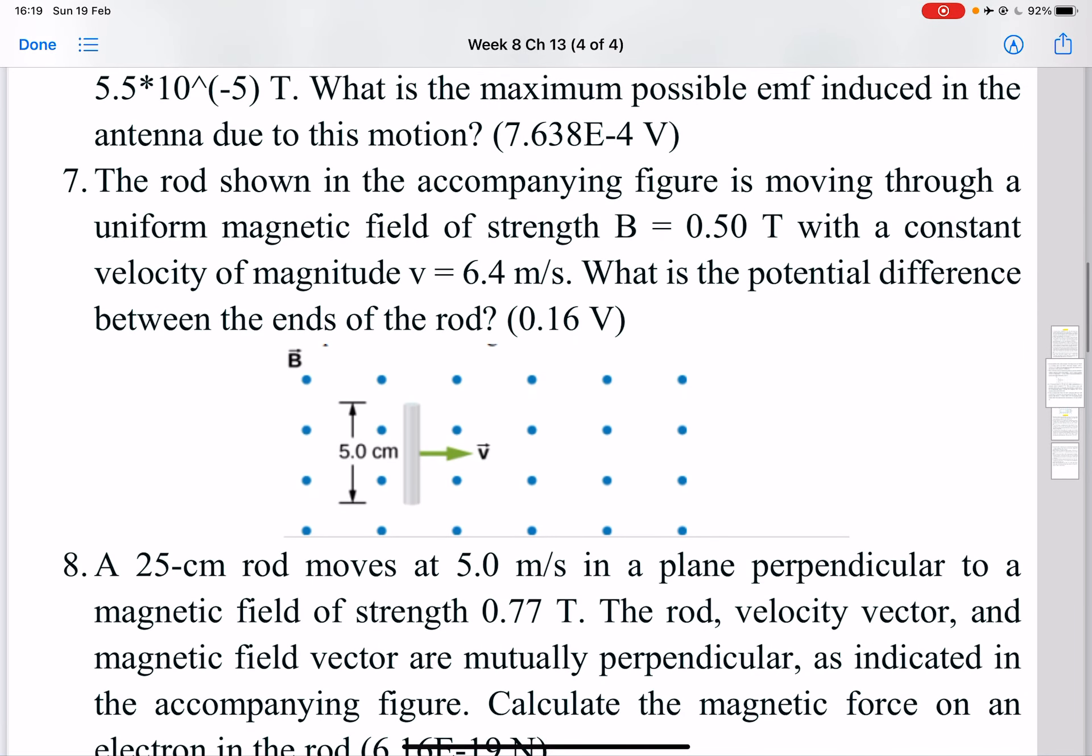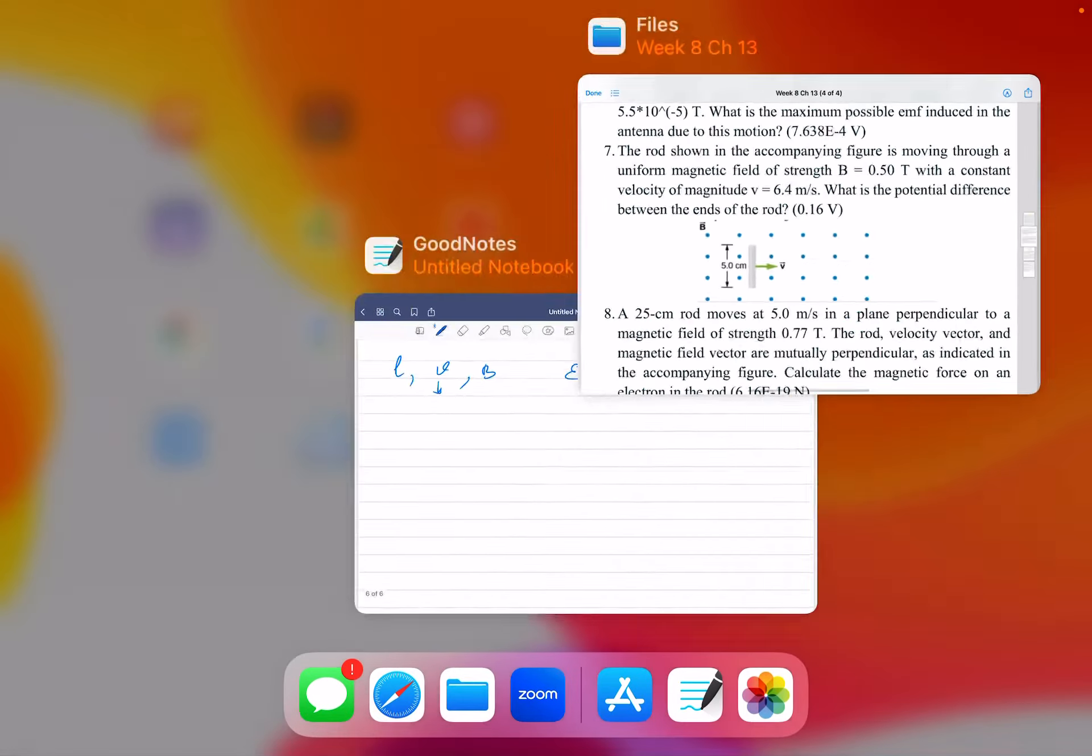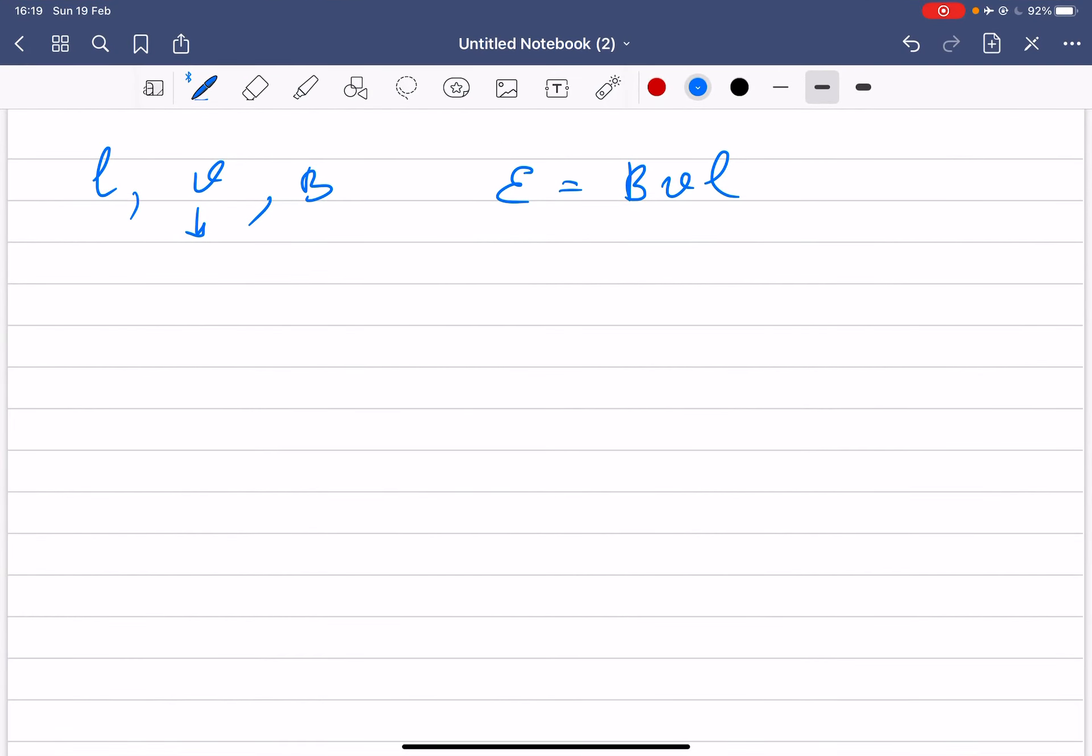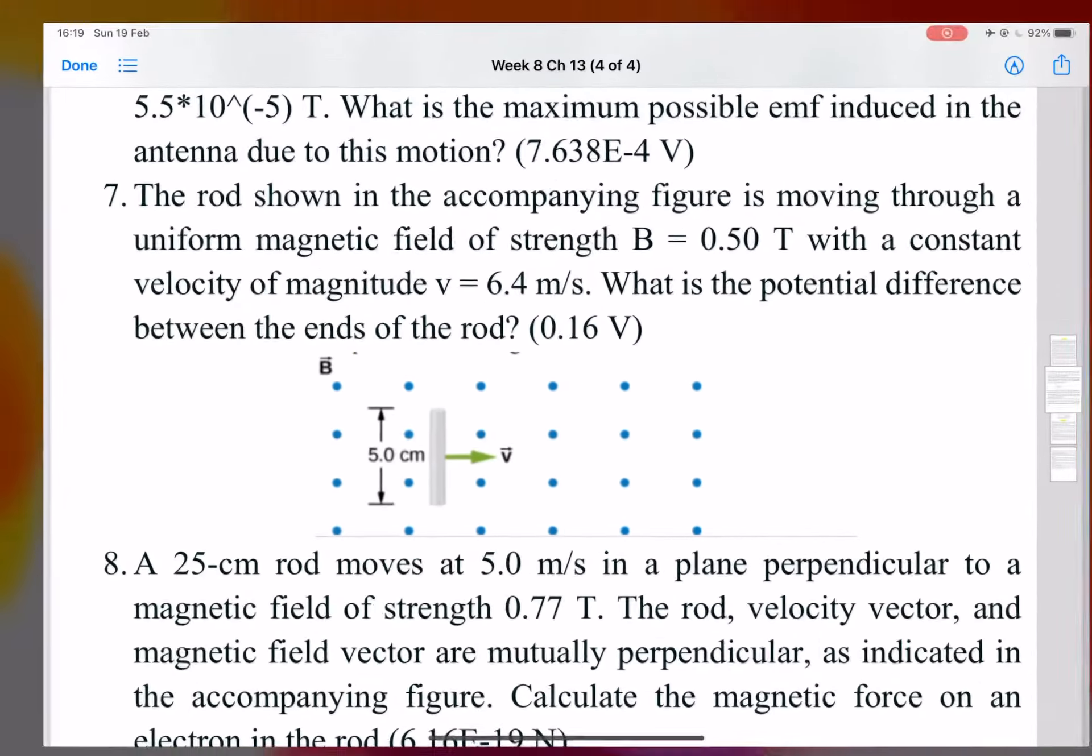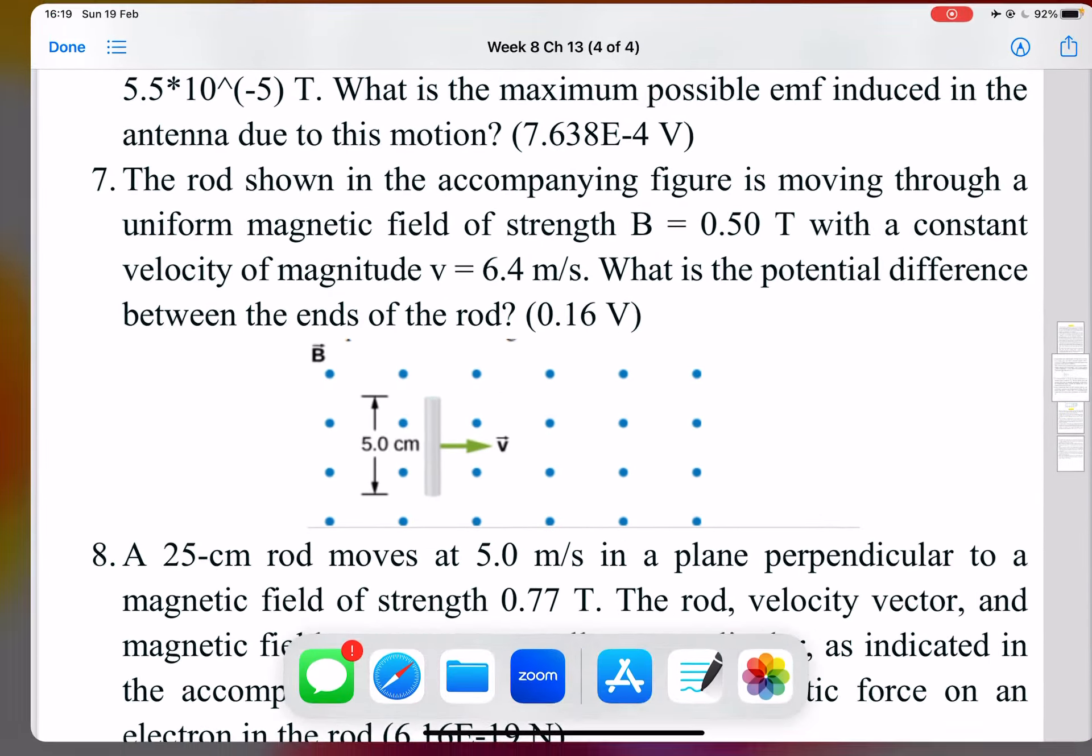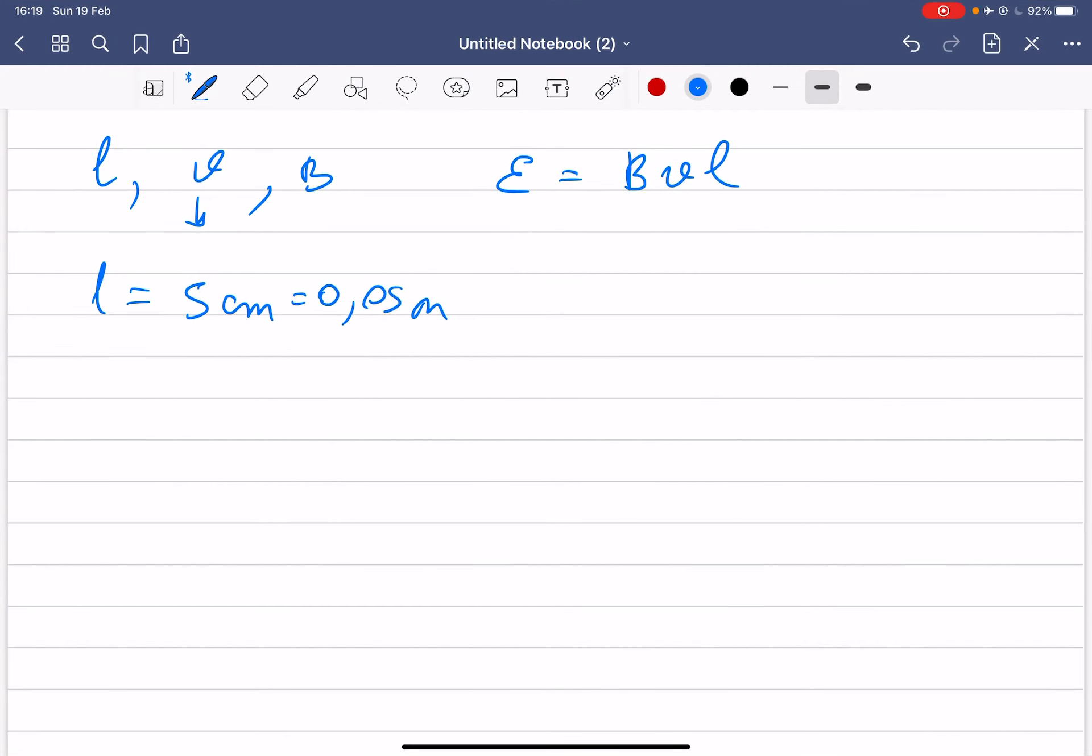In problem 7, so magnetic field is given, velocity is given, and the length of the rod is 5 centimeters. So the same thing basically. The rod is 5 centimeters, so again it has to be in meters, so 0.05 meters. The speed is given, magnetic field is given, so simply find emf and that's it.